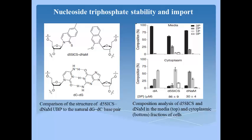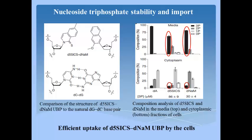After optimizing conditions, authors showed that unnatural phosphates, especially triphosphates, are stable in the media and are taken up by the cells. Although authors observed both extra- and intracellular dephosphorylation, the ratio of triphosphate to dephosphorylation products inside the cell remained roughly constant, indicating the extracellular concentrations and transporter-mediated influx are sufficient to compensate for intracellular decomposition. Also, the intracellular concentrations of intact triphosphates are significantly above the submicromolar values required by polymerases for replication.